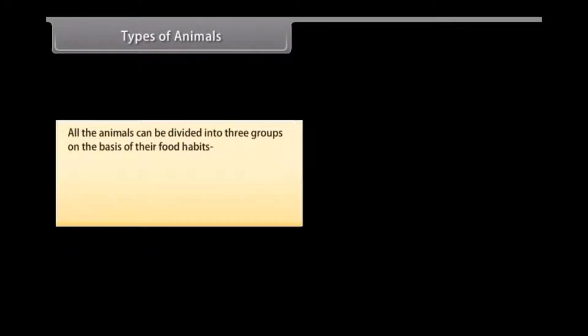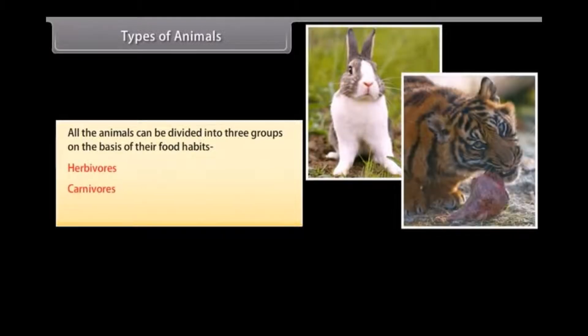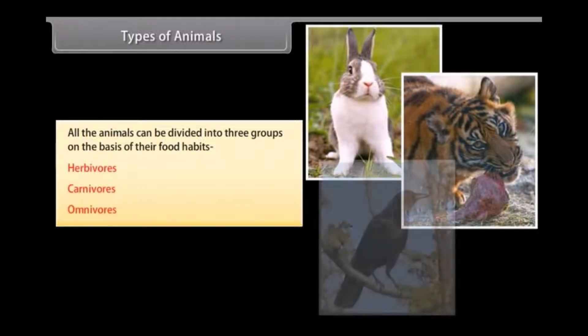Types of animals: All the animals can be divided into three groups on the basis of their food habits — Herbivores, Carnivores, and Omnivores.